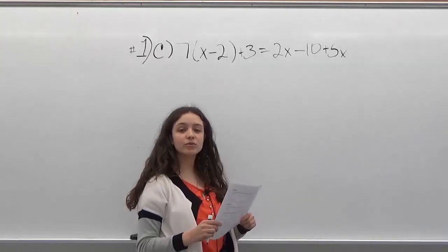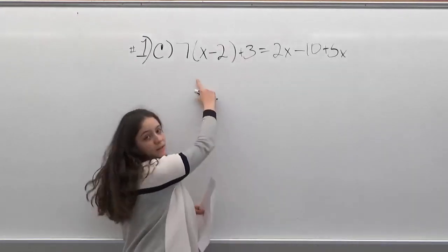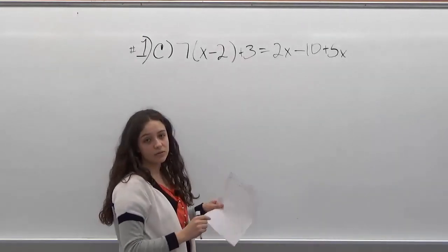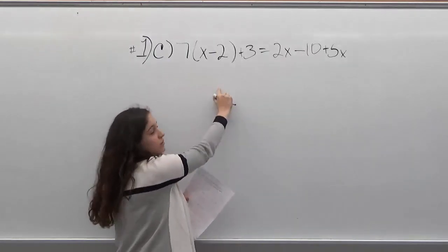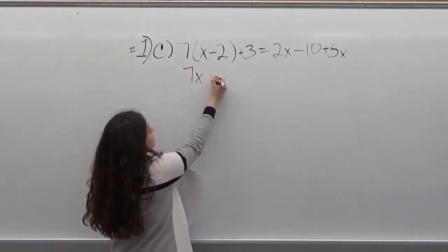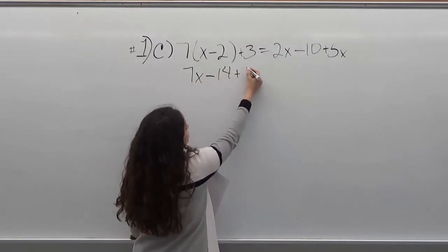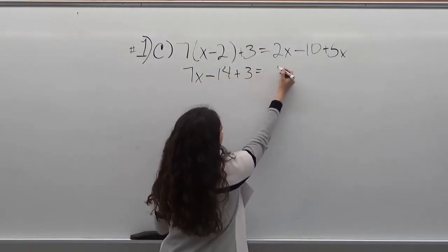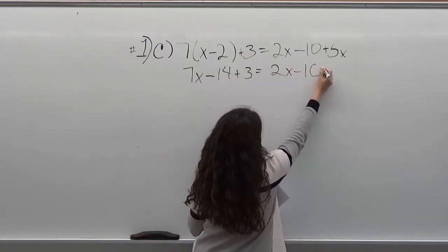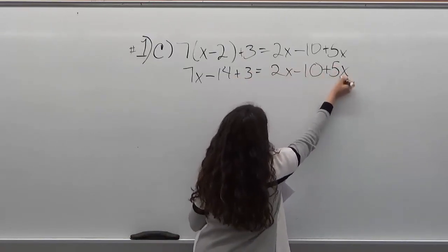Hello, welcome to Help Your Math. Today we are going to solve this equation for x. Our first step is going to be to distribute 7, so when you do that you're going to get 7x minus 14 plus 3 equals 2x minus 10 plus 5x.